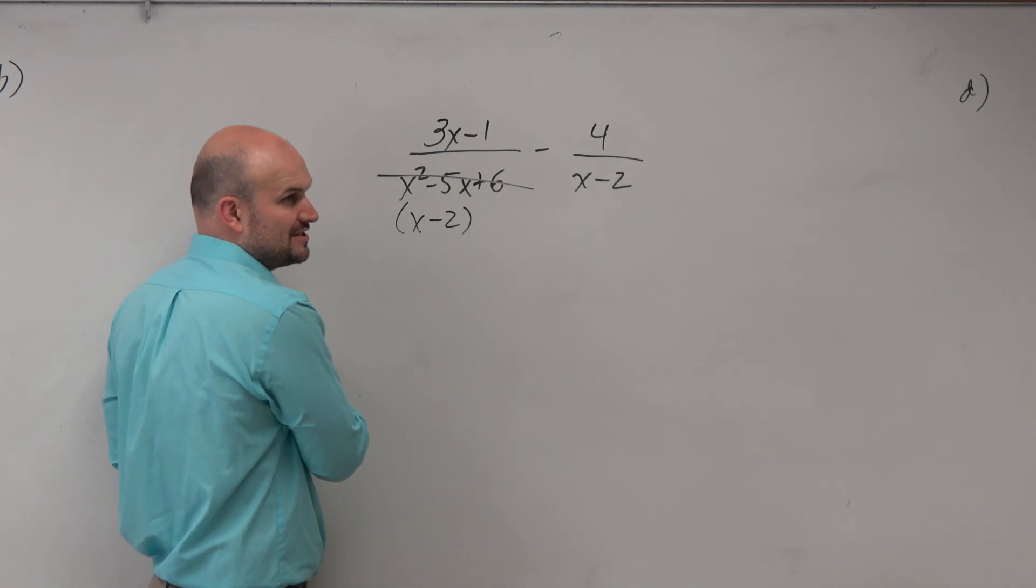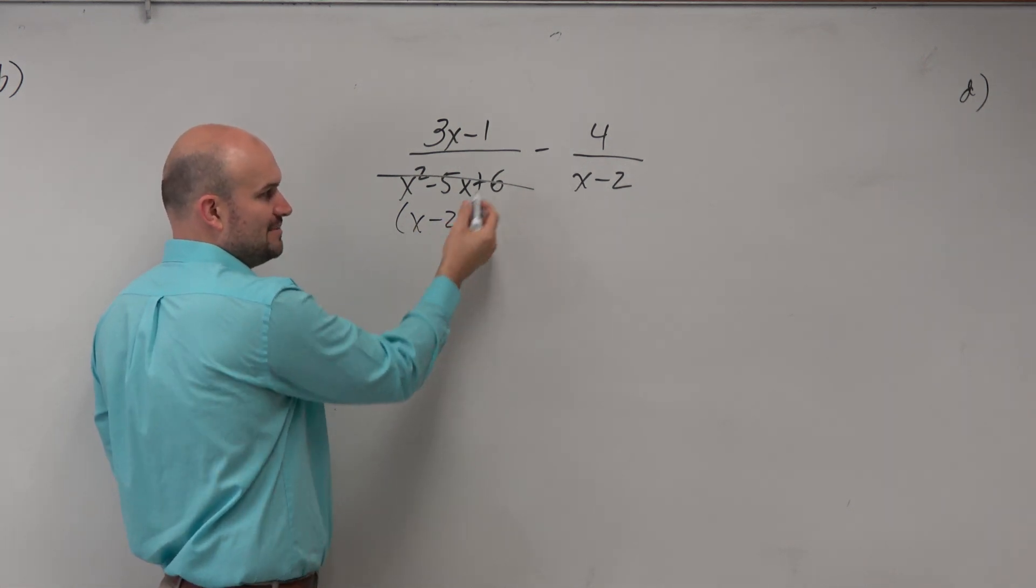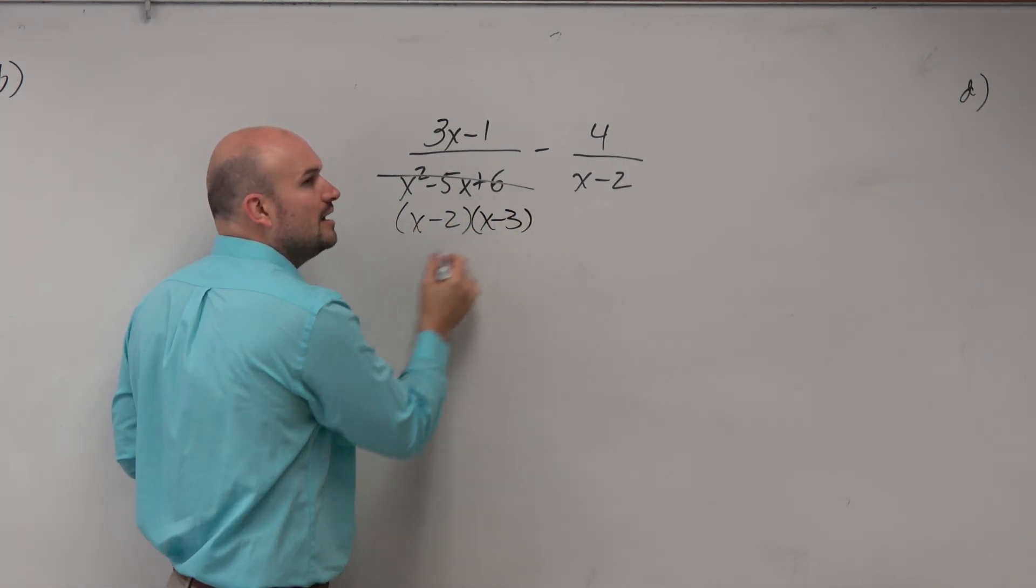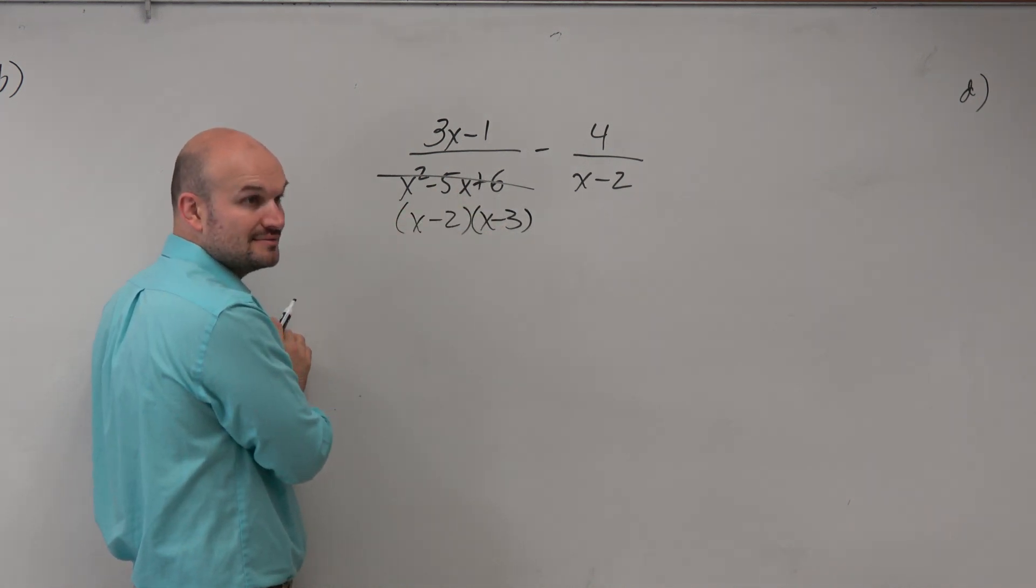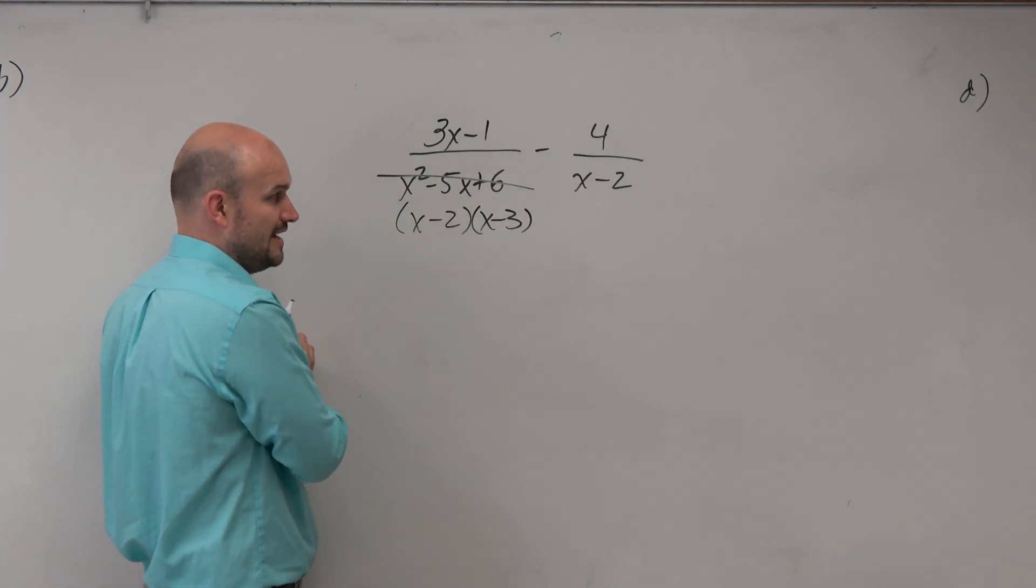Let's pretend that is a factor. Well, what do I have to multiply by to give me this? Oh, that's going to be x minus 3. Oh, that's the correct answer because that gives you a positive 6. Agreed? OK.